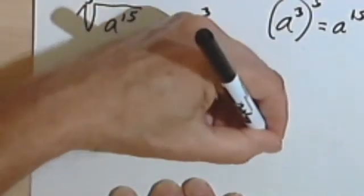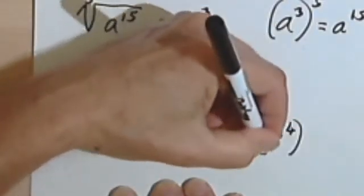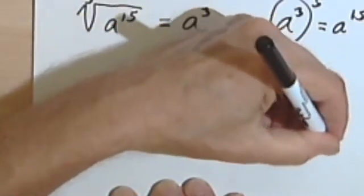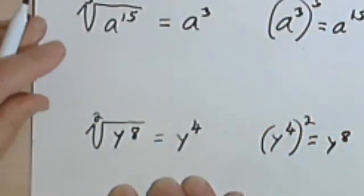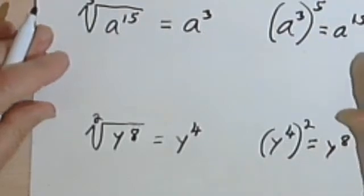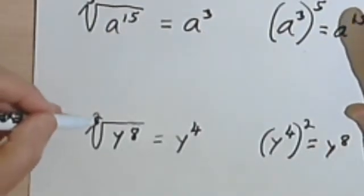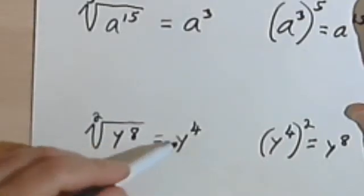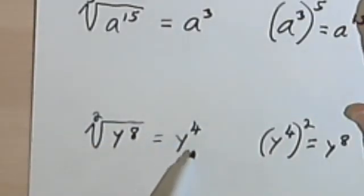And I can check it. y to the fourth raised to the second power. 4 times 2 is 8. It's going to give me y to the eighth. So basically all you're doing is dividing the index into this exponent, and that's going to give you what you have in your simplified answer.